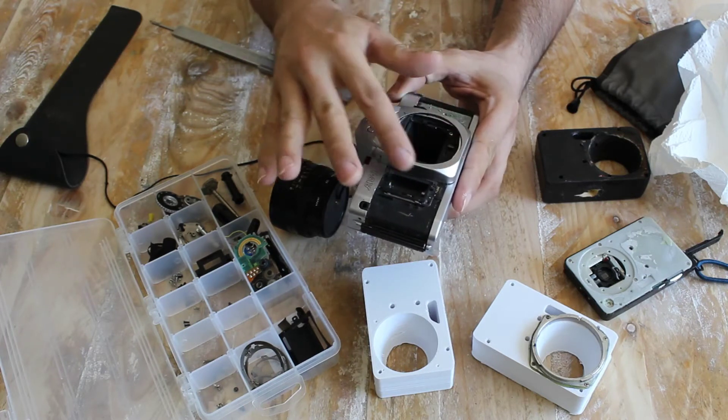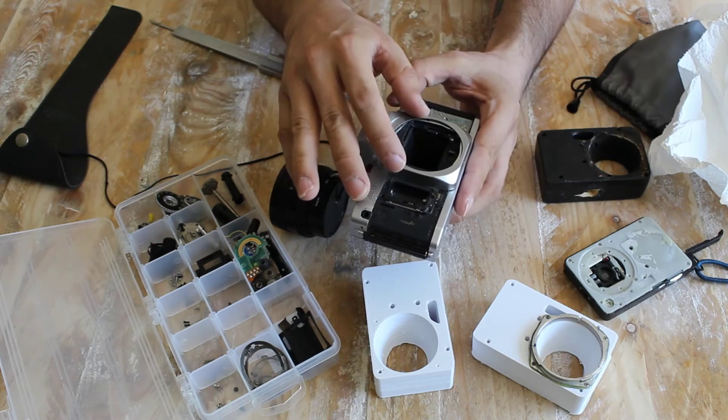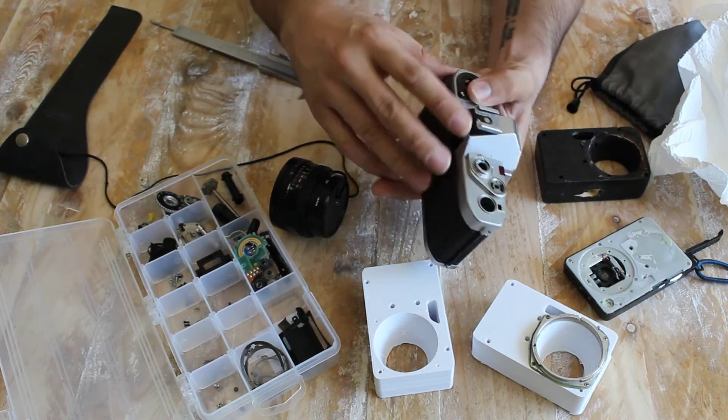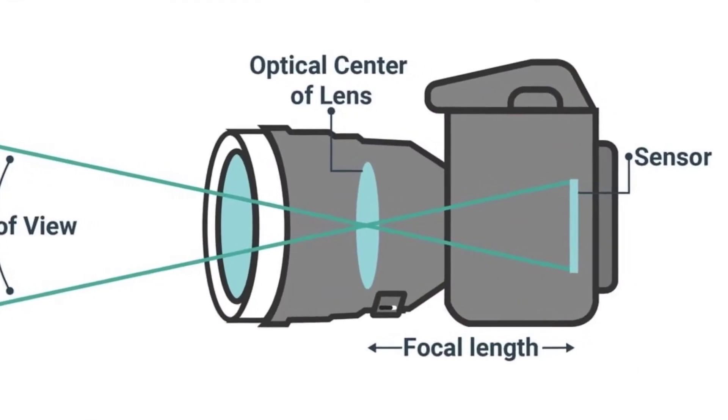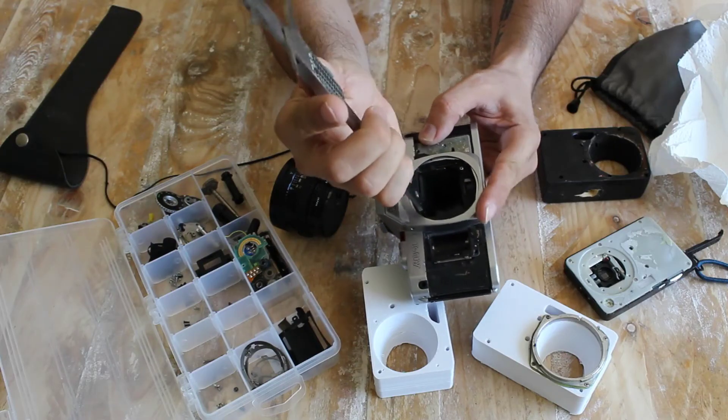After disassembling the whole camera I quickly realized that the only parts I could recycle were the lenses, so I measured the focal length which is the distance from the lens to the place the image is formed, in this case is 40 millimeters.